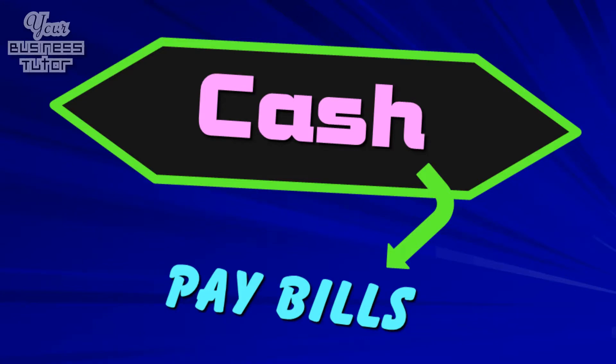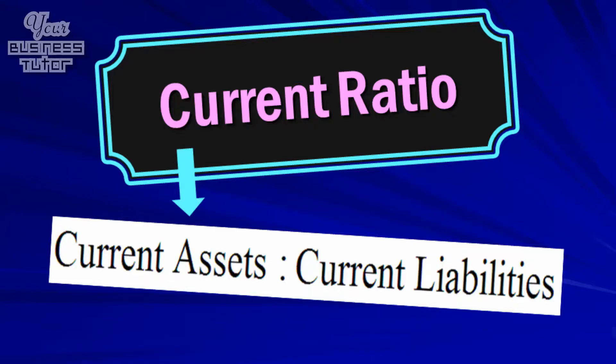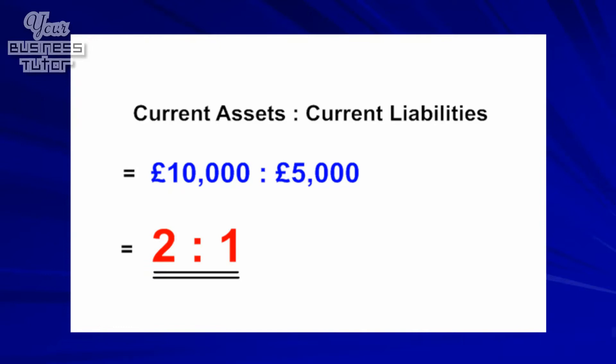With those terms defined, let's look at our first liquidity ratio: what is the current ratio? The current ratio measures how able a business is to pay its short-term debts, called current liabilities, using its short-term resources, called current assets. It identifies if a business has enough cash to pay its bills as they fall due. It is calculated by comparing current assets to current liabilities. When current assets equal £10,000 and current liabilities £5,000, the current ratio is 2 to 1, meaning the business has £2 to pay every £1 it owes.